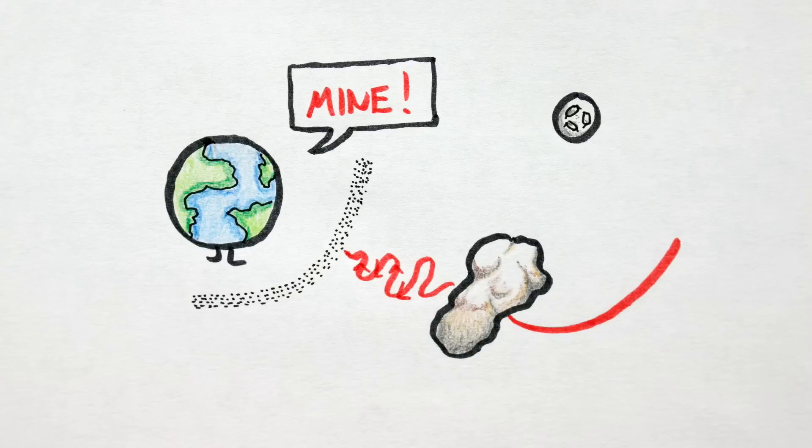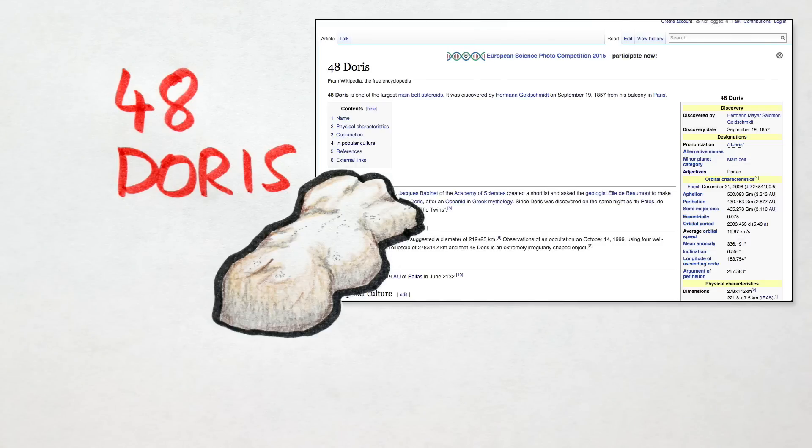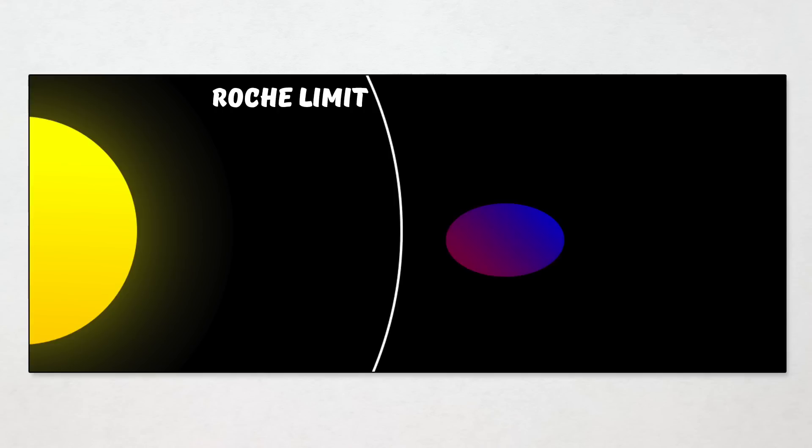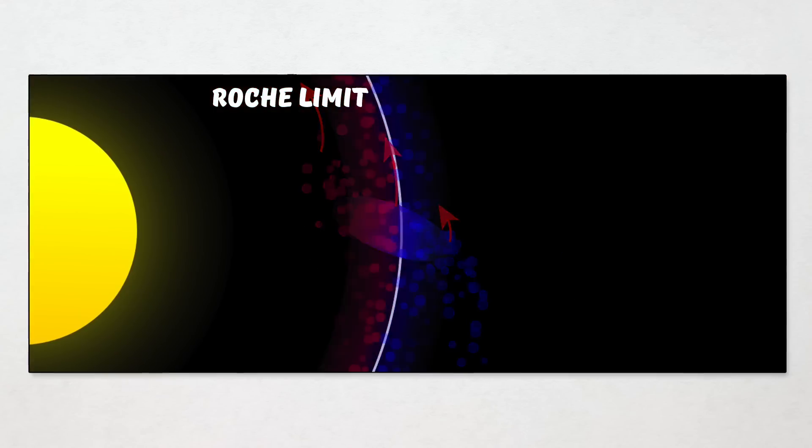So we're gonna need an asteroid. Meet 48 Doris, an actual real-life main-belt asteroid I'll use to model our hypothetical asteroid. Now, as Doris approaches Earth, she'll eventually cross what's known as the Earth's Roche limit. The Roche limit is the theoretical boundary around any astronomical object, outside of which satellites can exist, but inside of which they will be torn apart and form rings.